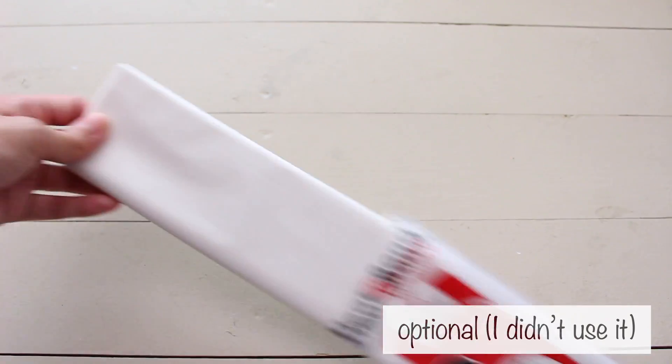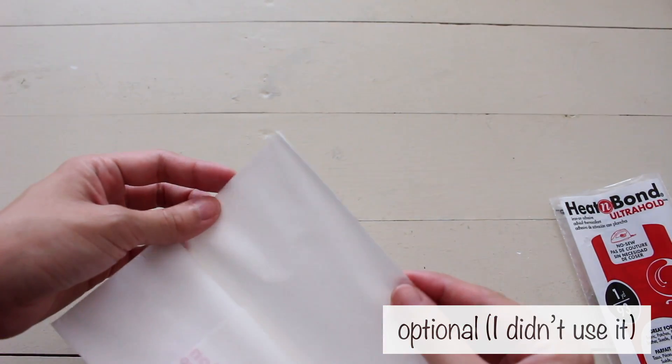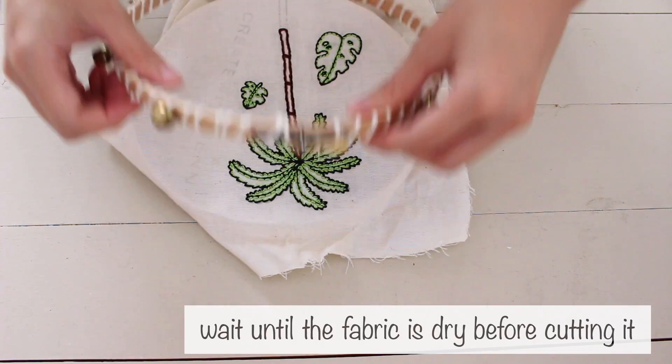You could use heat and bond if you just want to iron on the patch, but since I planned to sew it, I didn't use it. After it dries, cut around your design.